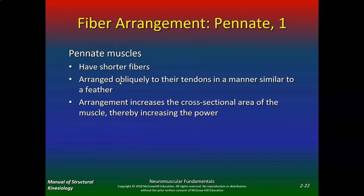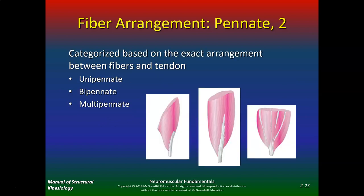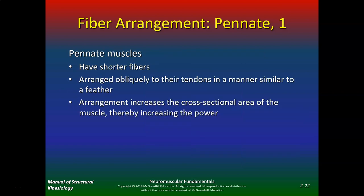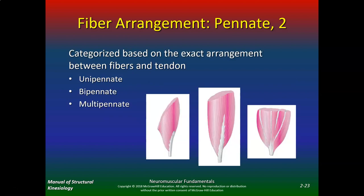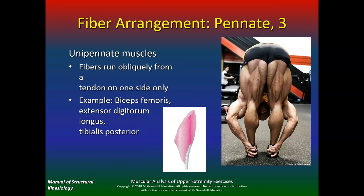Pennate muscles have shorter fibers arranged obliquely to their tendons in a manner similar to a feather. This arrangement increases the cross-sectional area of the muscle, thereby increasing power. We're done with parallels — we're in pennate now. Pennate muscles are categorized based on the exact arrangement between fibers and the tendon: unipennate, bipennate, and multipennate.